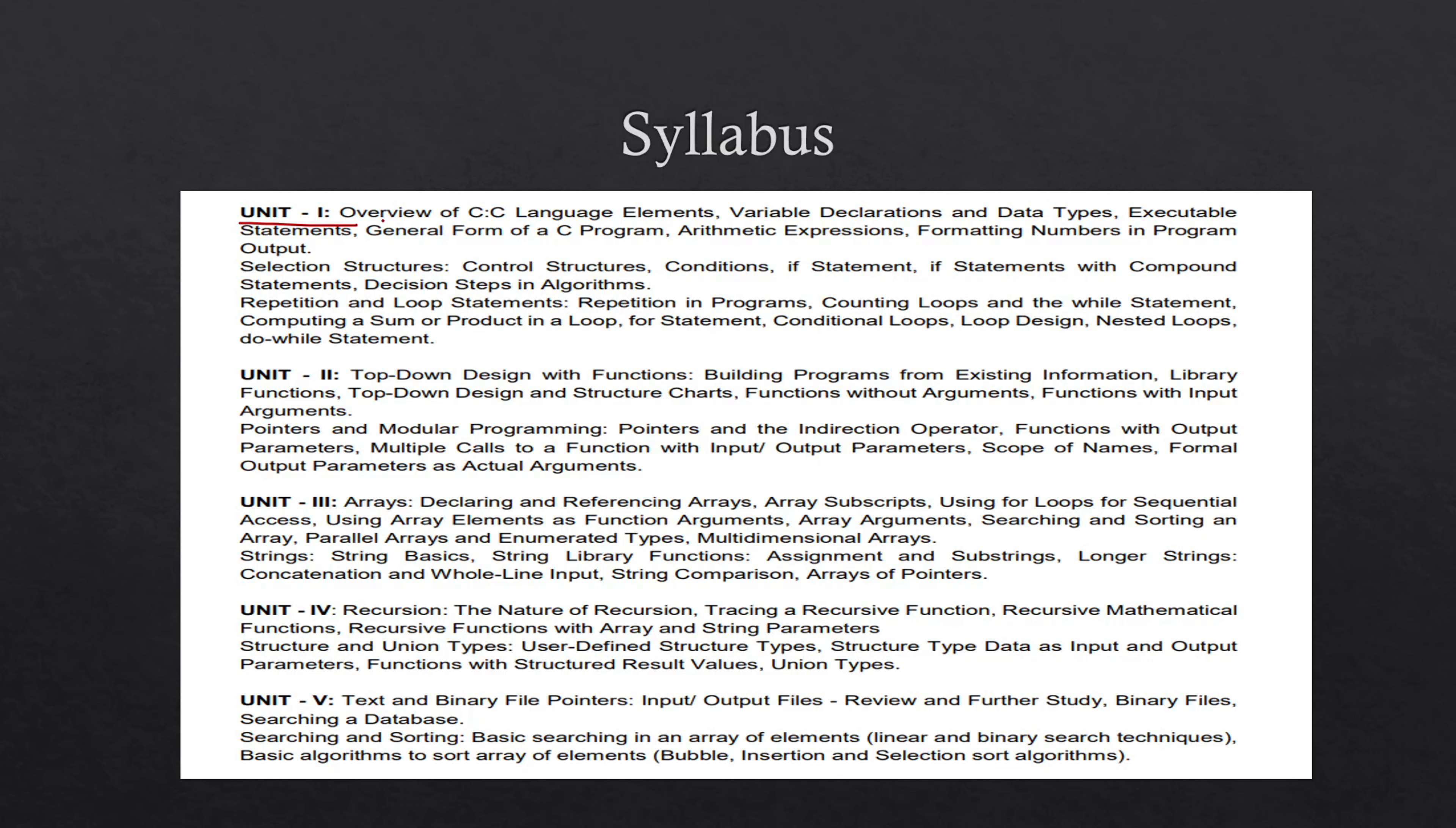Unit 1 consists of overview of C language, elements, data types, C program, arithmetic expressions, and selection structures. In selection structures you learn about conditions, if statements, if statement with compound statements, and decision steps in algorithm. Then repetition of loop statements: what are conditional loops, loop design, nested loops, do-while statement, etc.